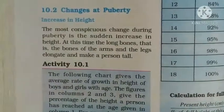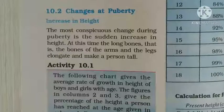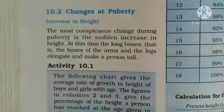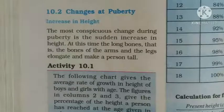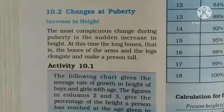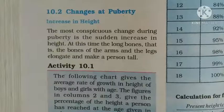Puberty में होने वाले changes — height में एकदम से increase होना puberty के दौरान होने वाला सबसे ज़्यादा conspicuous change है। इस समय body की long bones, legs और hands की bones elongate होती हैं, और इंसान tall हो जाता है, लंबा हो जाता है।